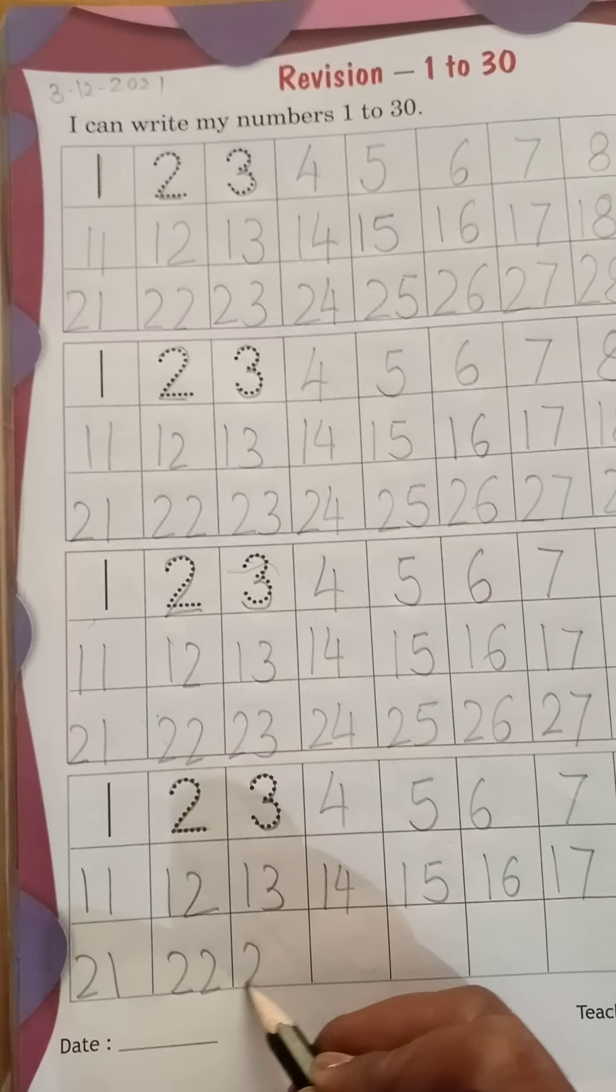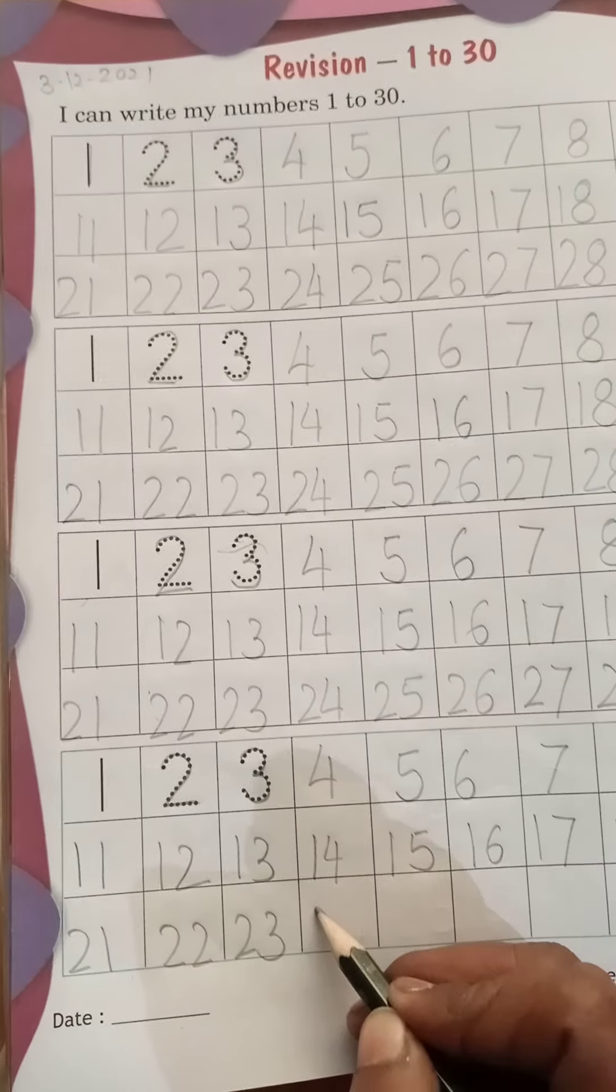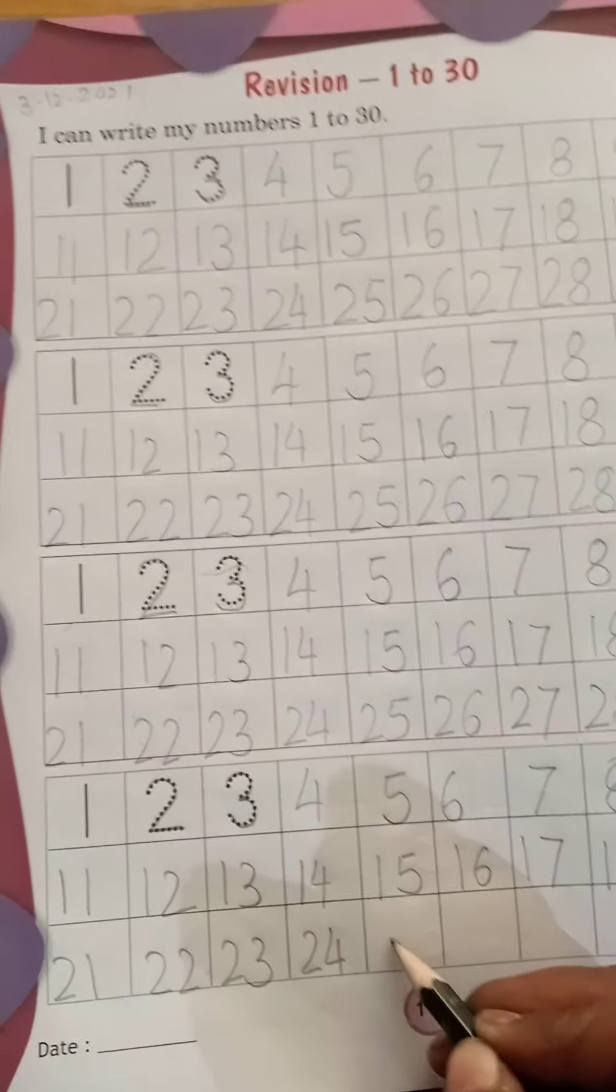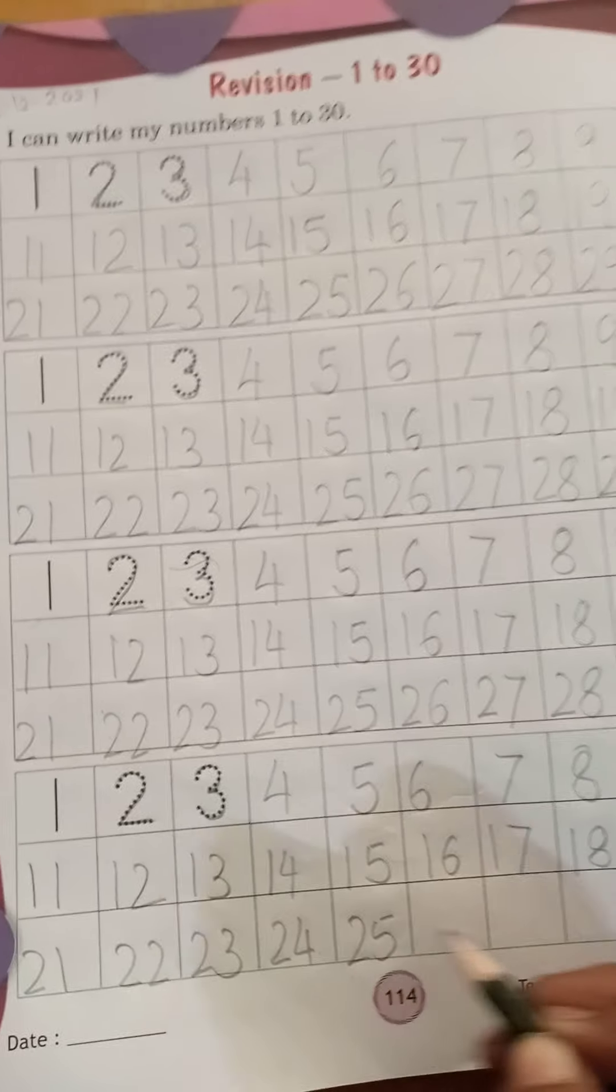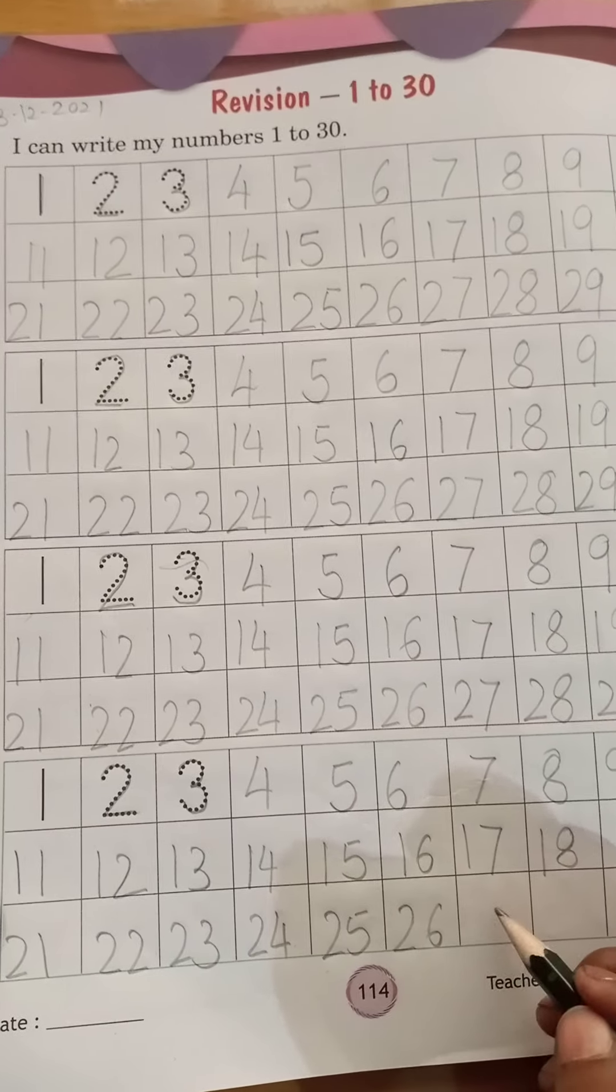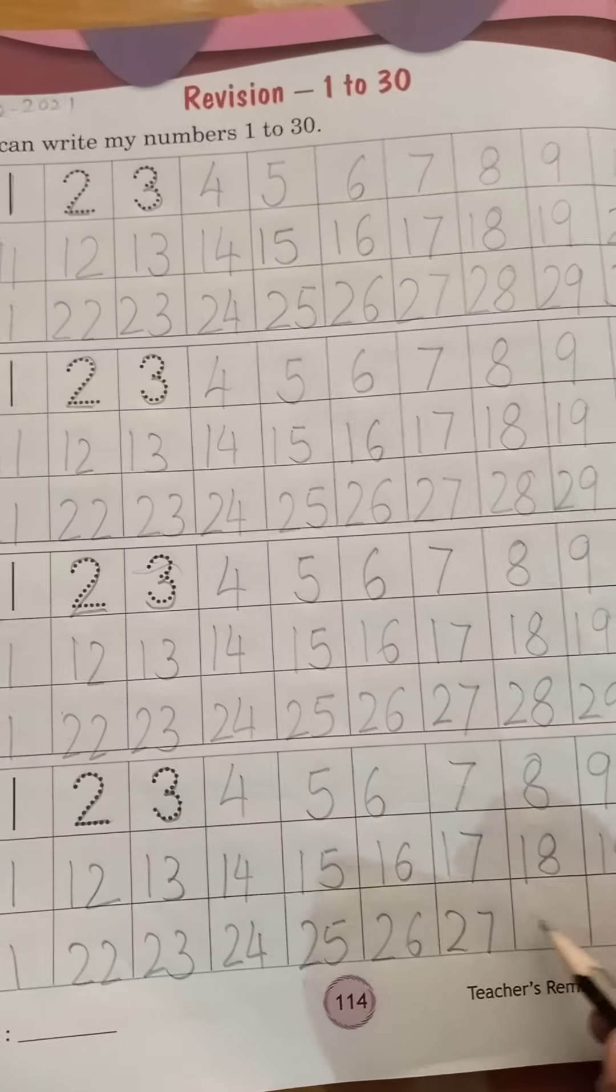2, 2, 22. 2, 3, 23. 2, 4, 24. 2, 5, 25. 2, 6, 26. 2, 7, 27.